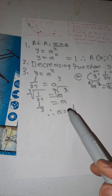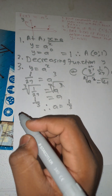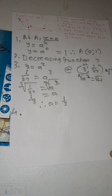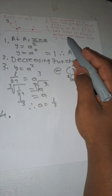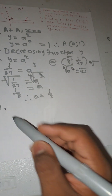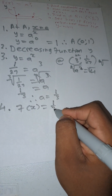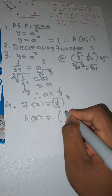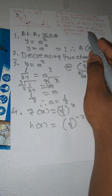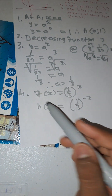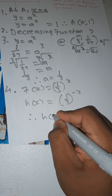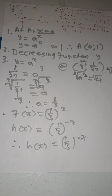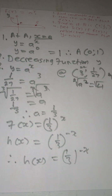Therefore a = 1/3, confirming it is between zero and one — consistent with a decreasing function. Number four: determine h(x) if f(x) is reflected about the y-axis. Since f(x) = (1/3)^x, reflecting about the y-axis replaces x with -x. Therefore h(x) = (1/3)^(-x).